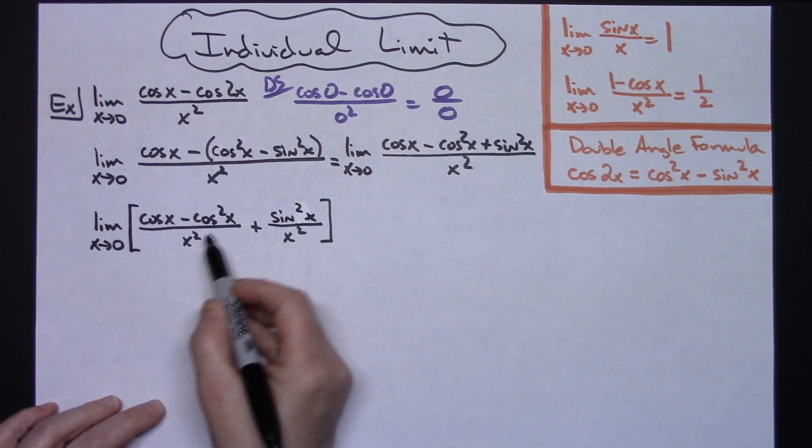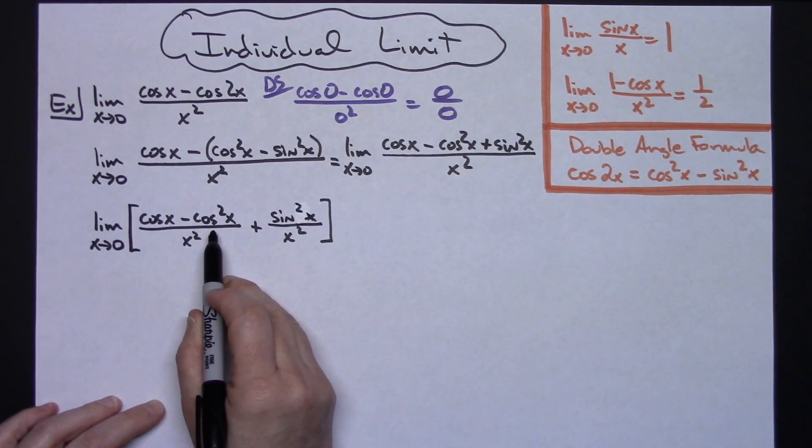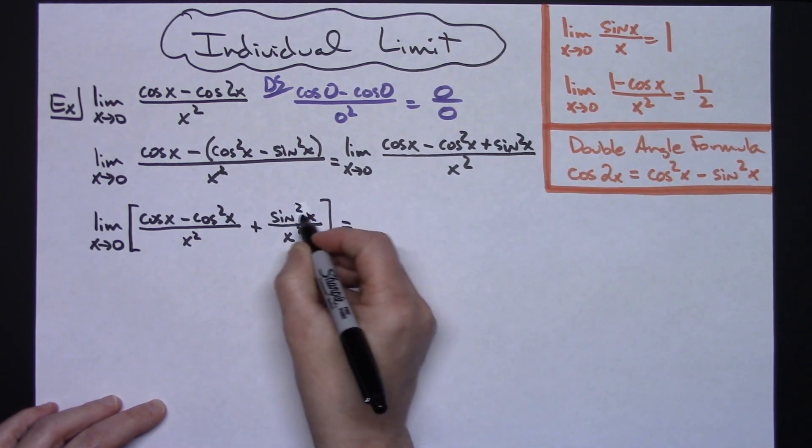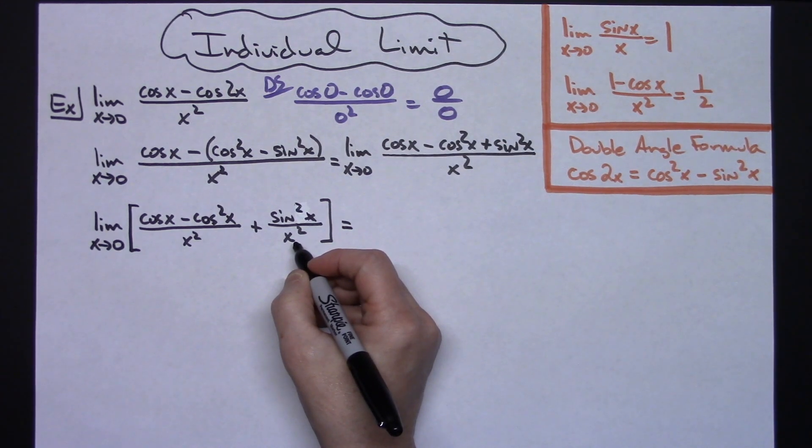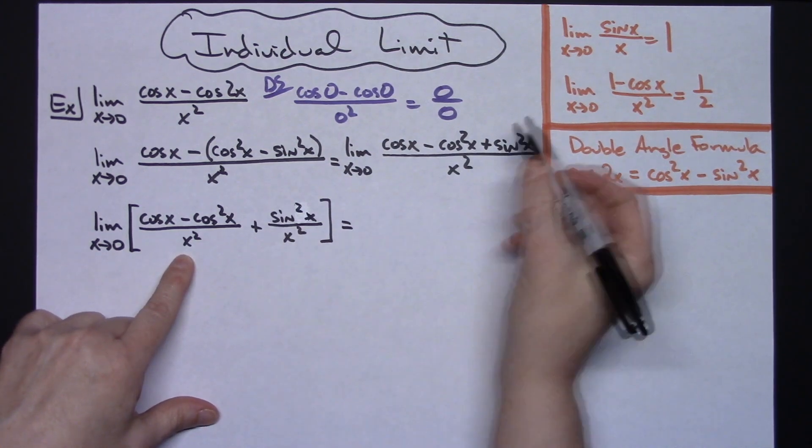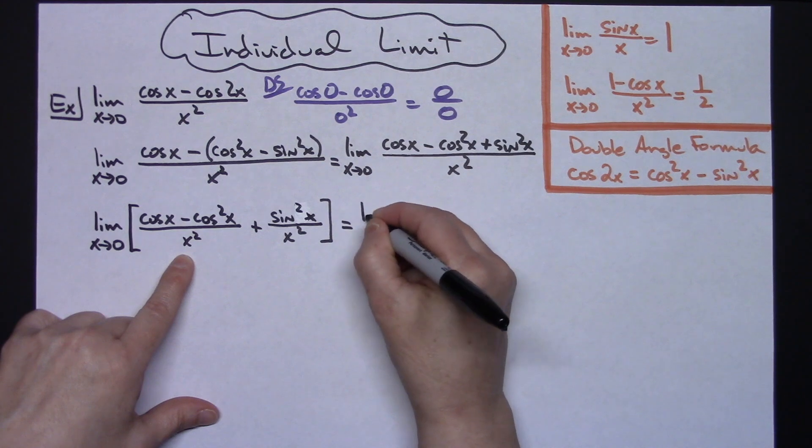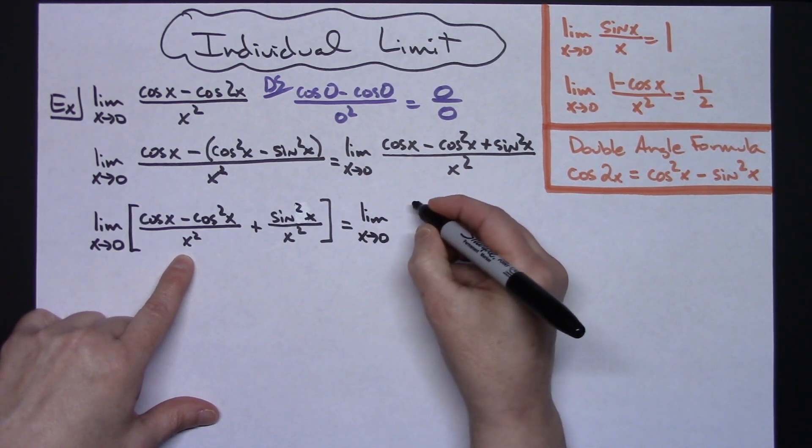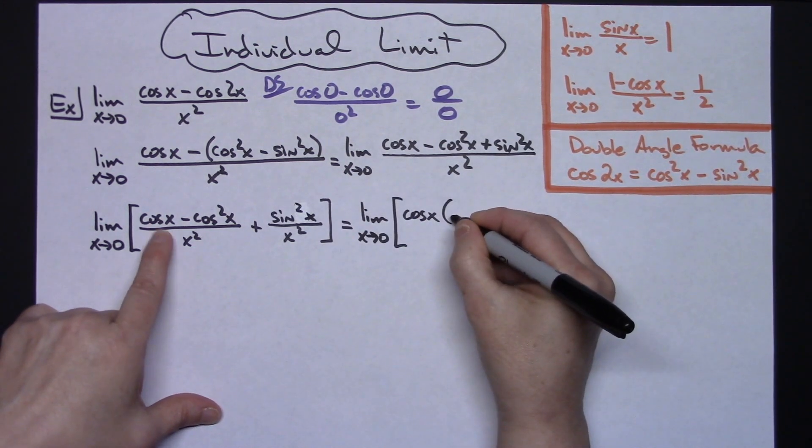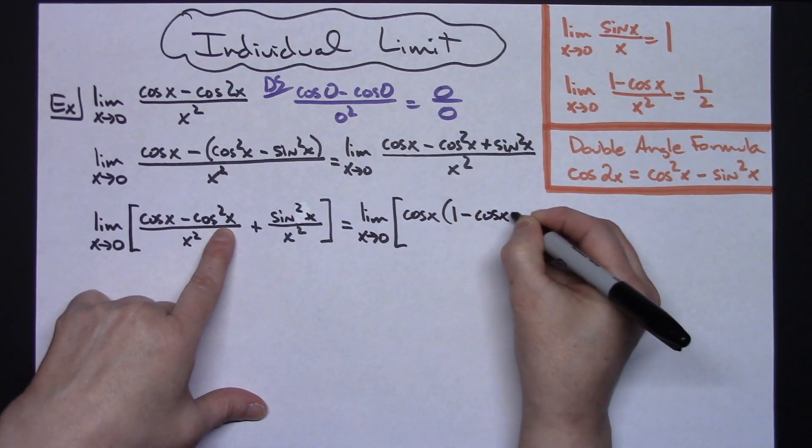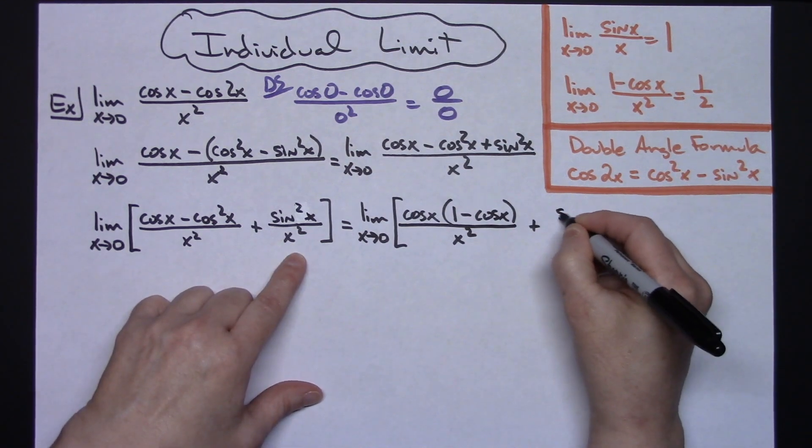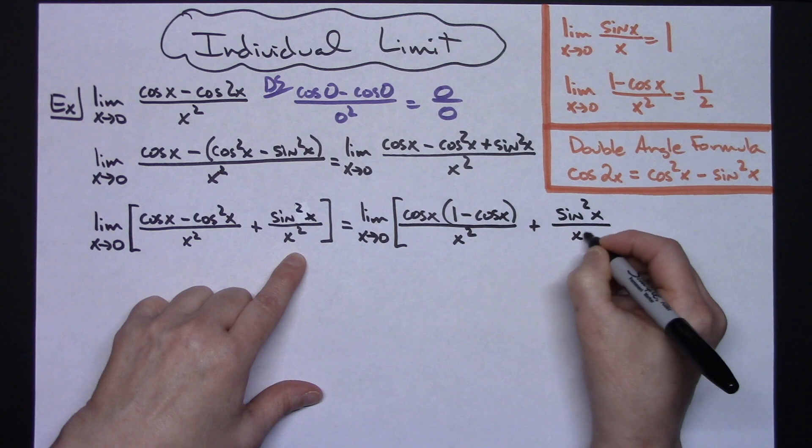Now from this one right here, I'm going to factor out a cosine x. That's going to get me a 1 right there, and I'm getting closer to this. And then on this, I'm just going to break this up into possibly two limits. I'm going to break this up into 2 sine x over x eventually. So we'll have the limit as x approaches 0, factoring that cosine x out. That would leave me with a 1 in the first term and then a cosine x in that second term all over x squared. And then let's go ahead and leave it in this line, sine squared x all over x squared.